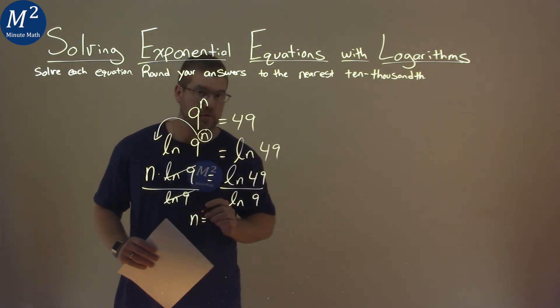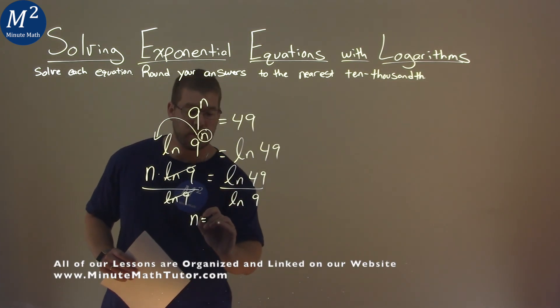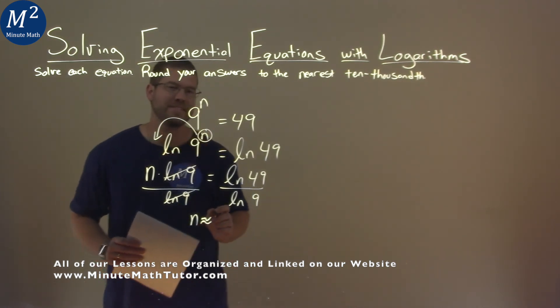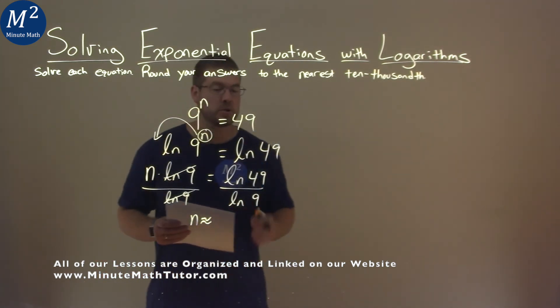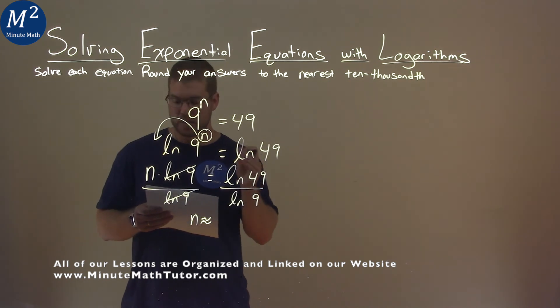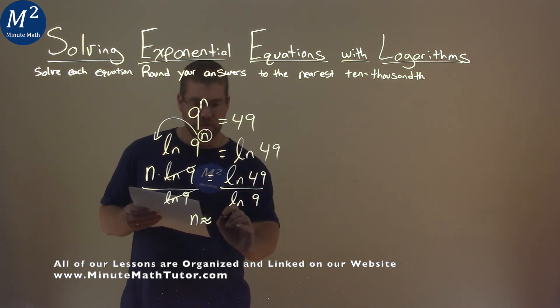n is equal to, now using our calculator, we're going to approximate this. Okay, that's an approximation equal sign there. And the natural log of 49 divided by the natural log of 9 comes out to be 1.7712.